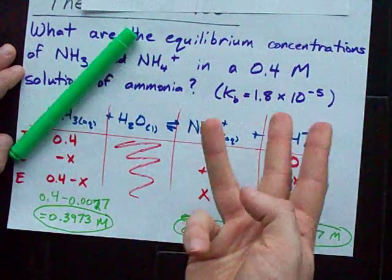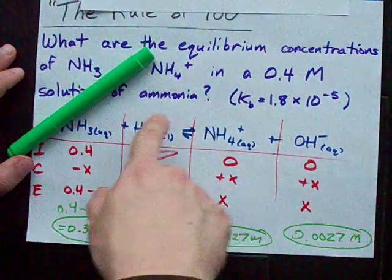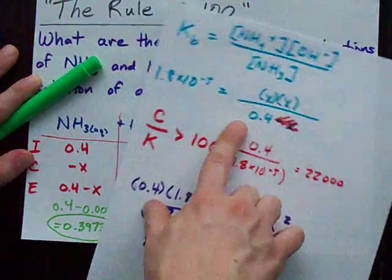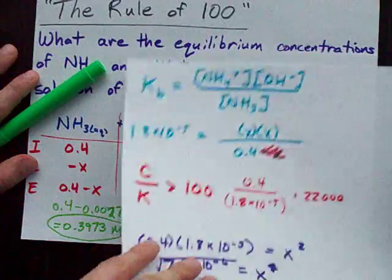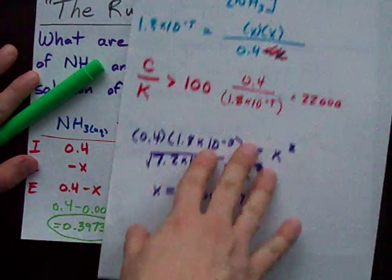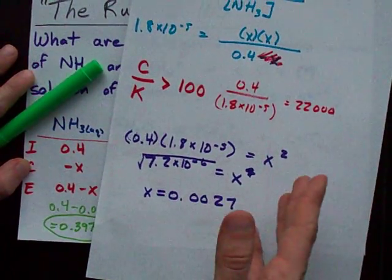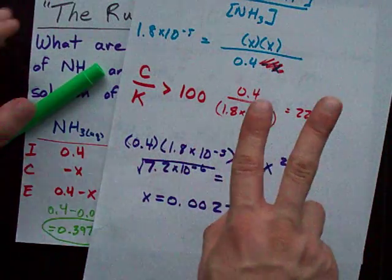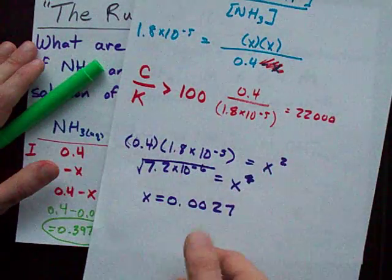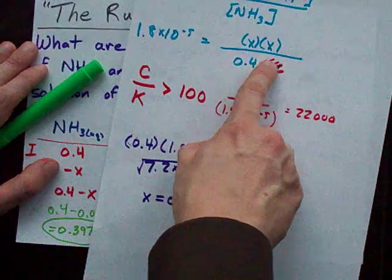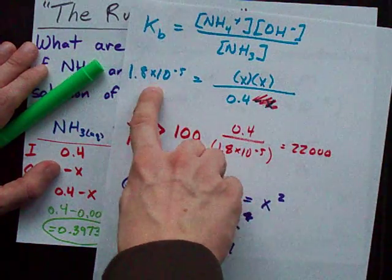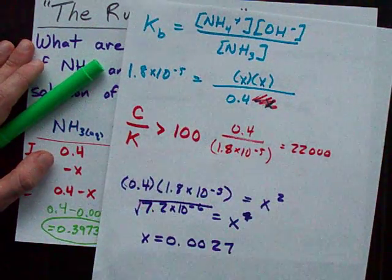All right, guys, that's the rule of 100. Use it to simplify your equilibrium expressions once you've plugged in the final row of your ICE table. It'll really simplify the math for you. But remember, real chemists don't say, I'm using the rule of 100. They just make the assumption because they know x is going to be small because the K is really small. All right, best of luck to you.